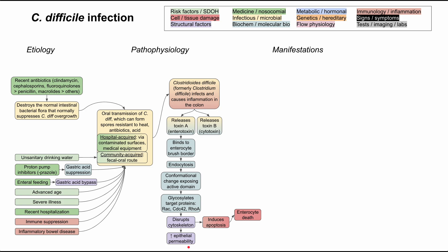Toxin B, the cytotoxin, performs the same mechanism as Toxin A — endocytosis, glycosylation of proteins, disruption of the cytoskeleton, increased epithelial permeability, and induction of apoptosis. It also goes through an additional mechanism: it forms pores in the endosomal membrane once inside the cell. This causes the endosomal contents to leak into the cytosol. These endosomal contents are very caustic to the inside of the cell, which damages the cell and triggers enterocyte death — very damaging to your gut and leading to many of your symptoms.